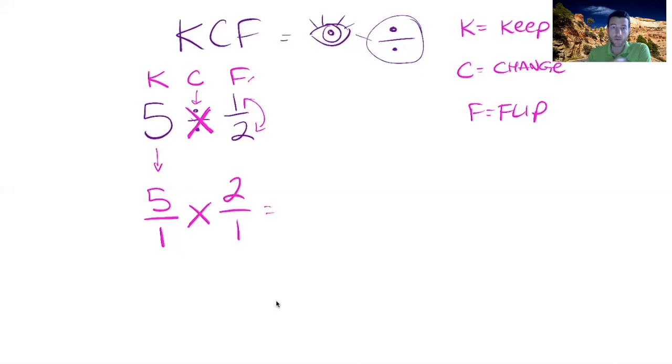Now we just multiply across like we have learned with multiplying fractions, and I get 10 over one. Ten over one is equal to 10. Now you might be saying, 'I get a larger number by dividing?' Well...